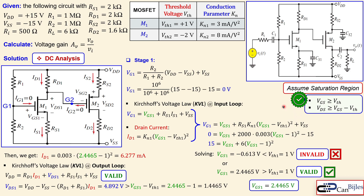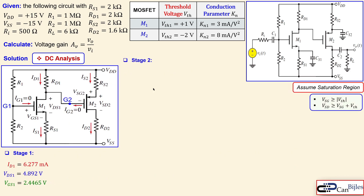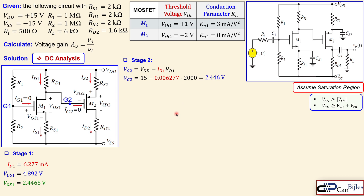We now continue with stage two. The voltage at node G2 is calculated by taking VDD and subtracting the voltage drop across RD1 from stage one. Since ID1 = 6.277 mA and RD1 is known, substituting these values gives VG2 = 2.446 V.